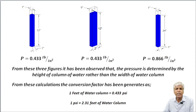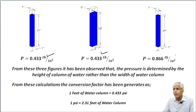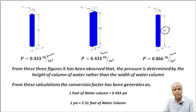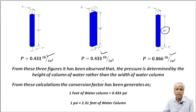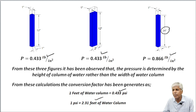In this slide, the pressures obtained through calculation are mentioned below each figure. In Figure 1 the pressure is 0.433 PSI. In Figure 2 the pressure is 0.433 PSI. In Figure 3, where the height of column of water is 24 inches, the pressure is 0.866 PSI. From these figures, it has been observed that pressure is determined by the height of the column of water rather than the width. A conversion factor has also been derived: 1 foot of water column equals 0.433 PSI, and 1 PSI equals 2.31 feet of water column.